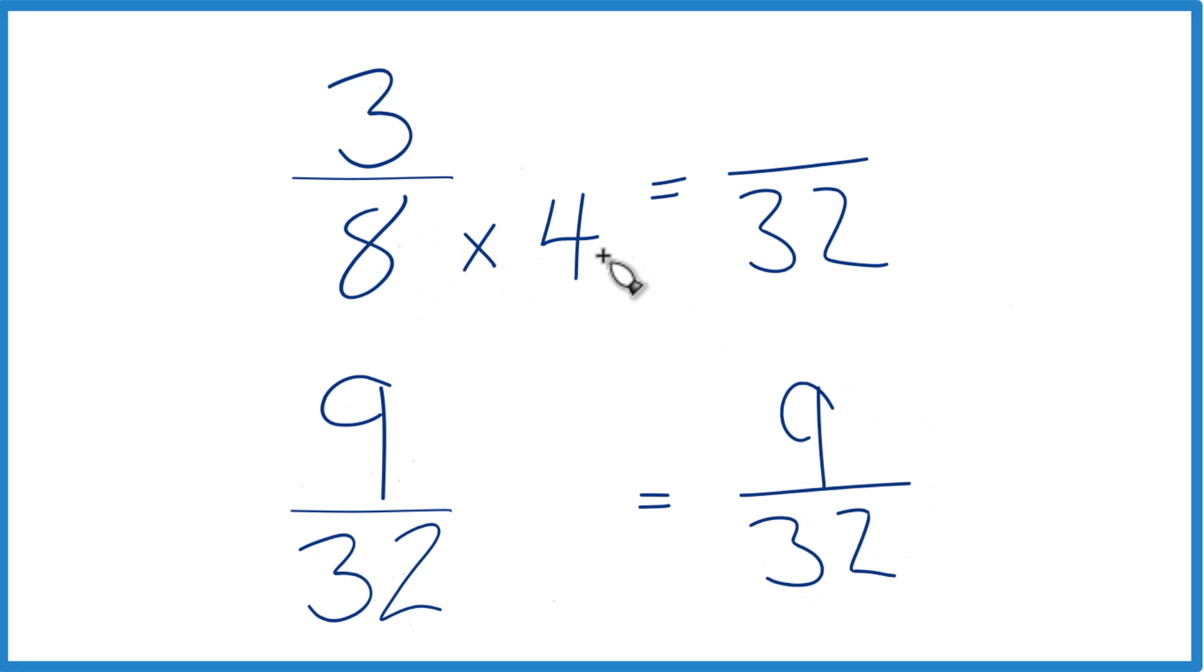But we can't just multiply the denominator by 4. We also need to multiply the numerator by 4. 4/4 is just 1, so we don't change the value, just the way we represent it. 3 times 4, that's 12.